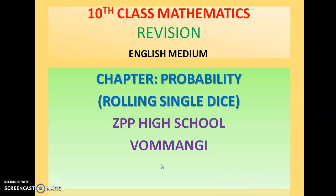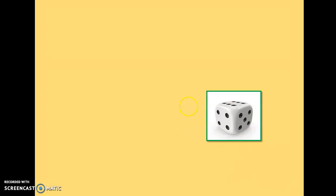Let us revise probability from 10th class mathematics. The topic here is single die, so let us discuss some problems when a single die is rolled. We actually covered this topic in our 9th class also, but let us revise it because some questions are being asked in half mark or one mark from this topic.